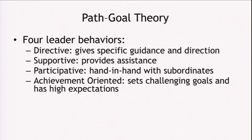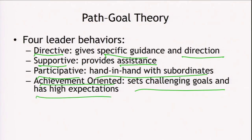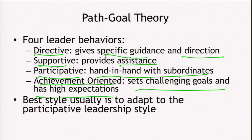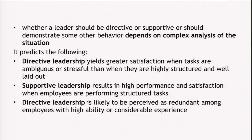Path goal theory identifies four leader behaviors: directive leadership, where the leader gives specific guidance and direction; supportive leadership, where the leader provides assistance; participative leadership, where the leader works hand in hand with subordinates; and achievement oriented leadership, where the leader sets challenging goals and has high expectations. Whether a leader should be directive, supportive, or demonstrate any other behavior depends upon a complex analysis of the situation.